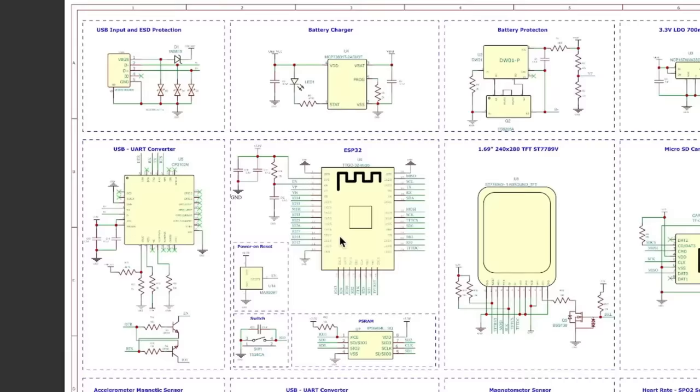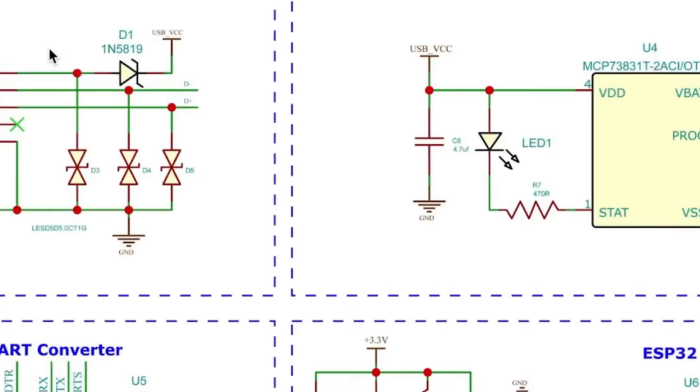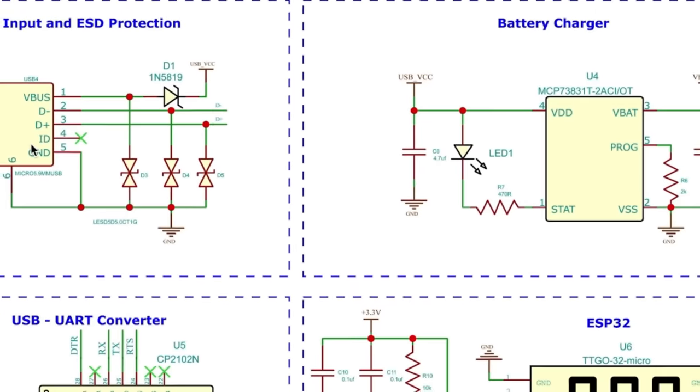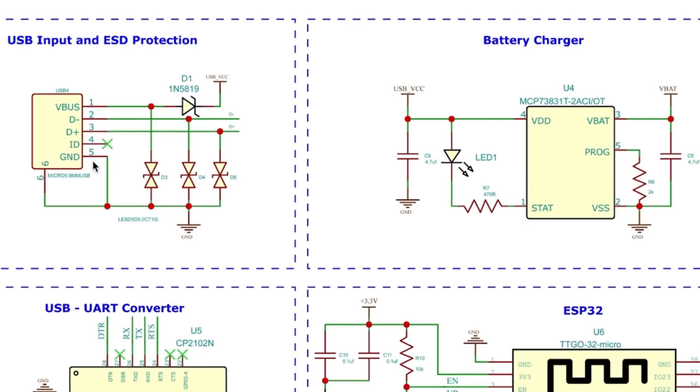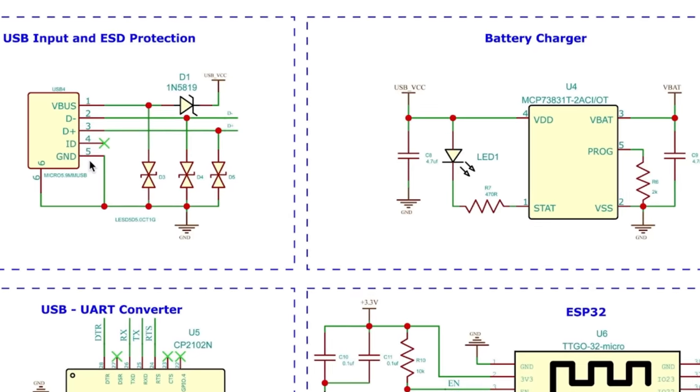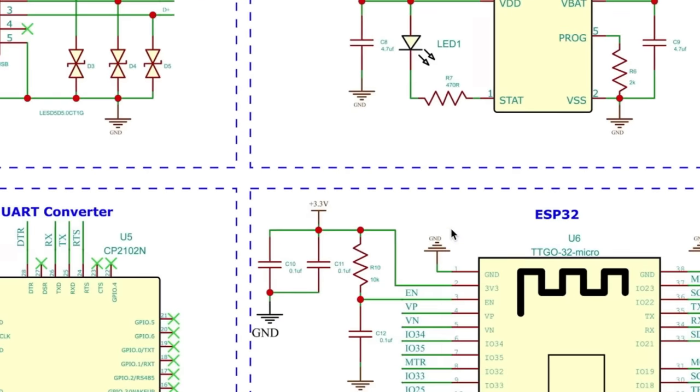So here we are. The first section here is the USB input and ESD protection. We have a micro USB input port over here and this TVS diode for ESD protection. This micro USB port can be used for charging the battery - yes we have a LiPo battery inside our watch - and we can also use this to program our ESP32 microcontroller.